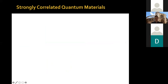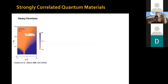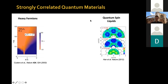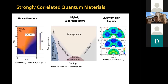In condensed matter physics and quantum materials, there are a number of strongly correlated quantum materials. Heavy fermions exhibit very unusual behavior — electrons there are characterized by effective masses hundreds or even thousands of times those of the bare electron mass. Quantum spin liquids are systems where spins, even at zero temperature, do not localize but are constantly fluctuating due to quantum fluctuations, resulting in a highly entangled topological state of matter. Perhaps the most studied are the high-temperature superconductors, whose phase diagram of temperature versus doping has a variety of phases, few of which we have complete understanding of even after more than three decades of investigation.